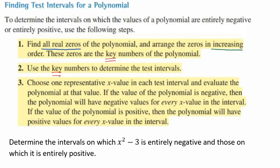We'll choose one representative x value in each test interval and evaluate the polynomial at that value. If the value of the polynomial is negative, then the polynomial will have a negative value for every x value in the interval. And if the polynomial is positive, then the polynomial will have positive values for every x value in the interval.